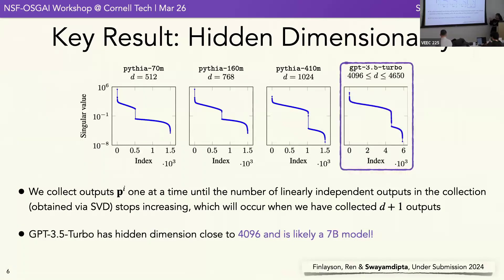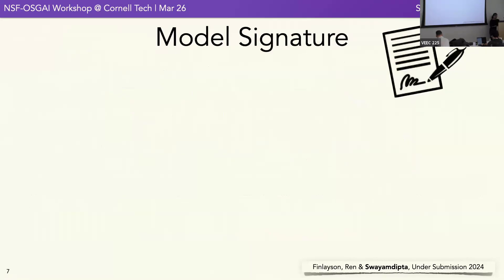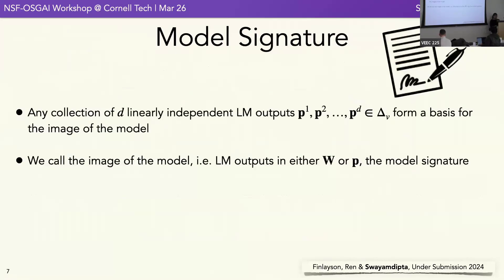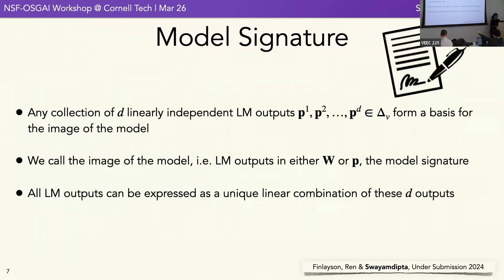More interestingly, we discovered this for GPT-3.5, which has a hidden dimension of about 4096, corresponding to something like a 7 billion parameter model — which is very cool. What we can also get out of this is something called a model signature, which comes from the image of the model. The key thing is that model signatures are unique.